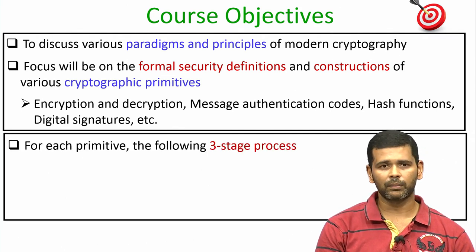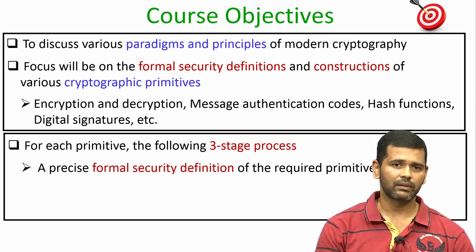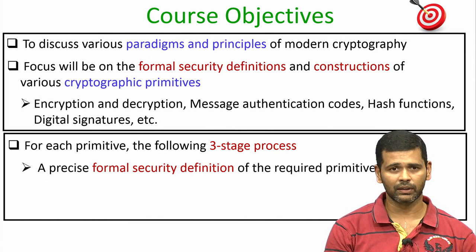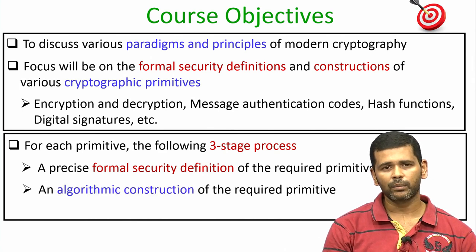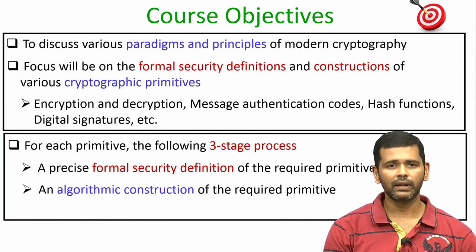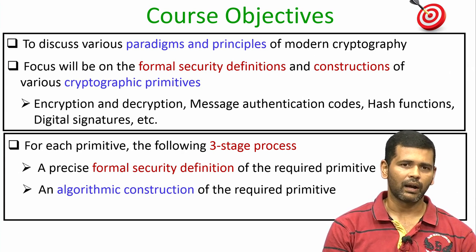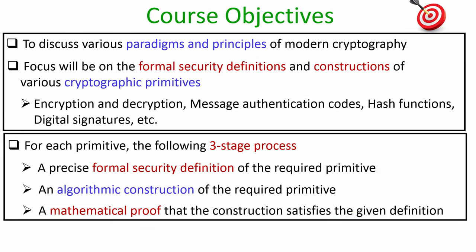For each of these cryptographic primitives we will follow the following three-stage process. In the first stage we will give a precise formal security definition of the underlying primitive that we are interested to construct. Once we have the formal security definition we will proceed to give an algorithmic construction of the required primitive, and finally in stage three we will give a rigorous mathematical proof that the algorithmic construction given in stage two indeed satisfies the formal definition given in stage one.